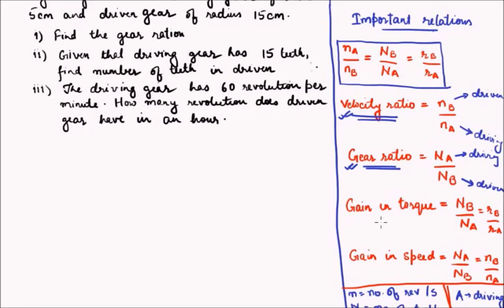Gain in torque. Gain in torque we saw in the last lecture. It is the ratio between number of teeth in the driven to that of driving gear. So gear ratio and gain in torque are reciprocal. And since Nb by Na can also be written as Rb by Ra, gain in torque is also the ratio of the radius of the driven to the radius of the driving gear.